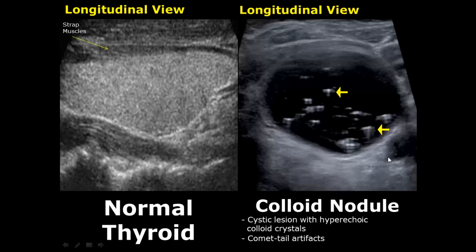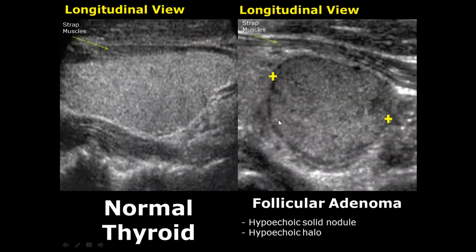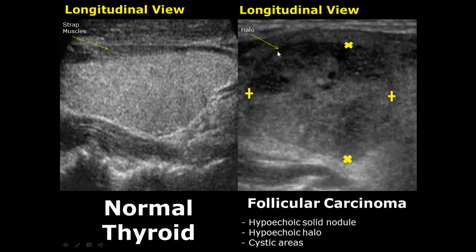A follicular adenoma is a hypoechoic mass — here it is more hypoechoic compared to the thyroid tissue, and the halo is even more hypoechoic, appearing darker. This type of appearance can be malignant. Here is a longitudinal view showing a follicular adenoma: a hypoechoic mass with a hypoechoic halo. Follicular carcinoma is the malignant form of this entity.